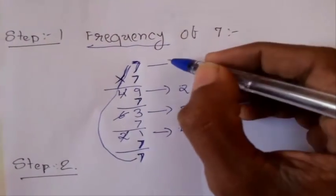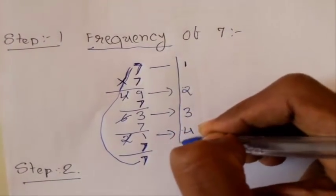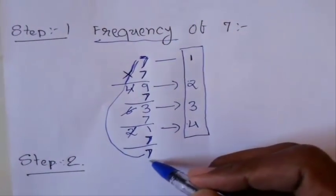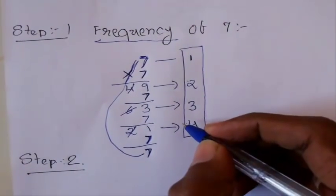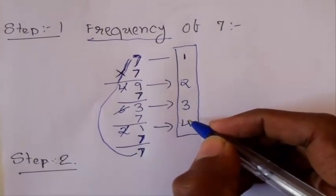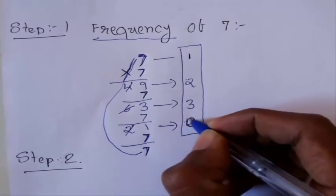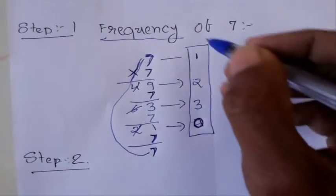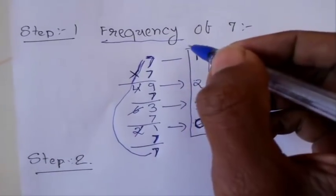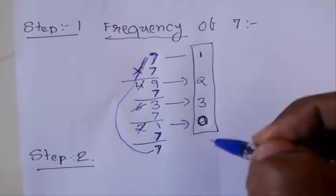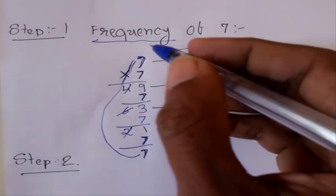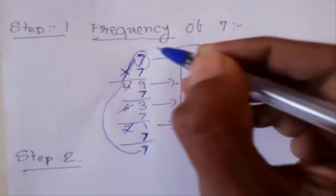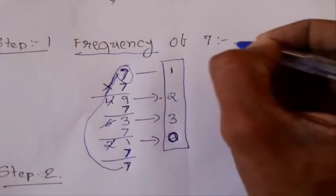We stop here once we get the same 7 again. We give the previous rank, which was 4, a value of 0, and that frequency count is our answer. So the frequency of 7 is 4 — that is 1, 2, 3, and 4. This means that after 4 series multiplications, the units digit will be repeated again. The frequency of 7 is 4.